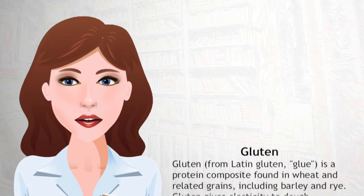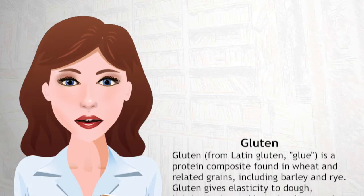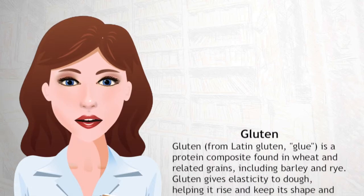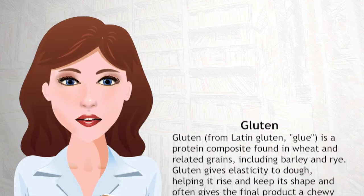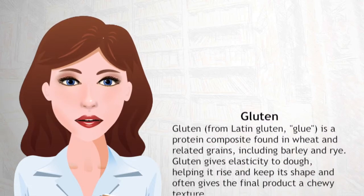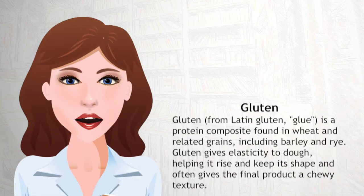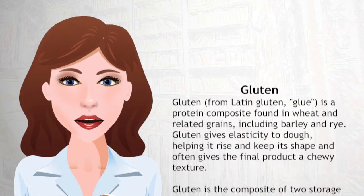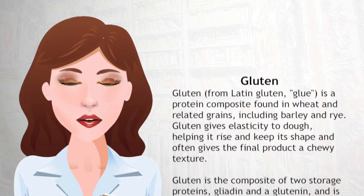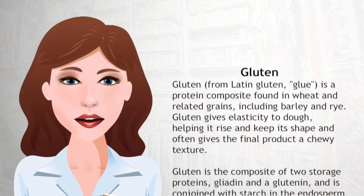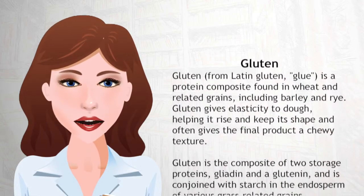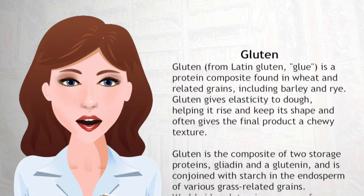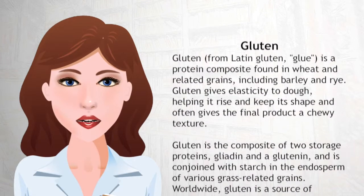Gluten — from Latin gluten, meaning glue — is a protein composite found in wheat and related grains, including barley and rye. Gluten gives elasticity to dough, helping it rise and keep its shape, and often gives the final product a chewy texture.